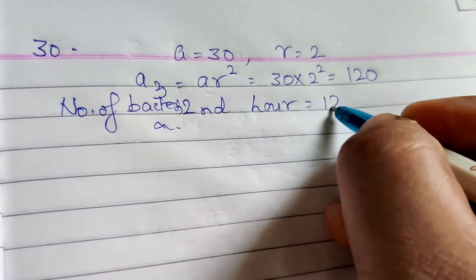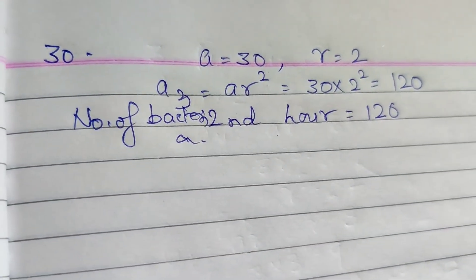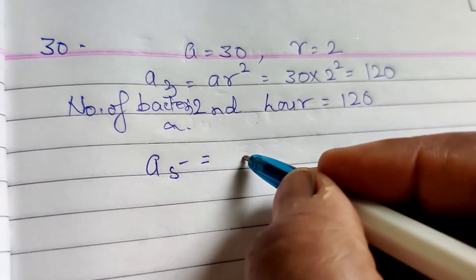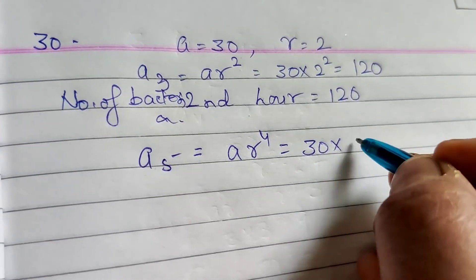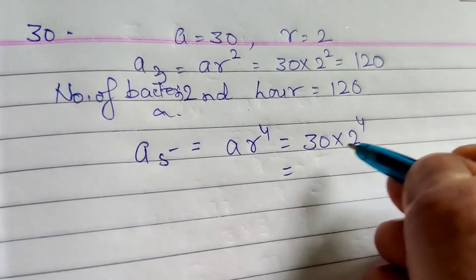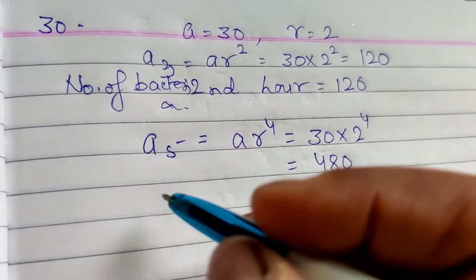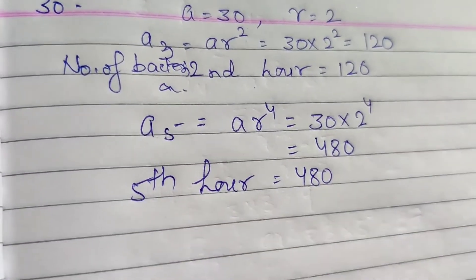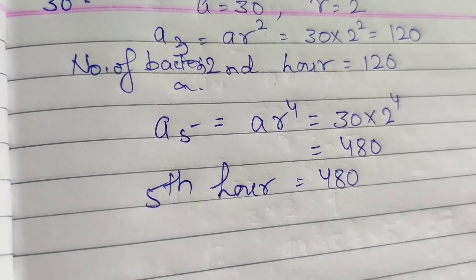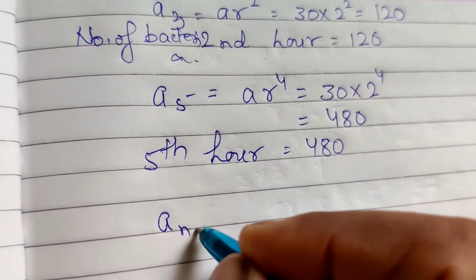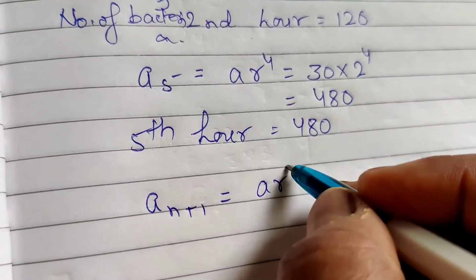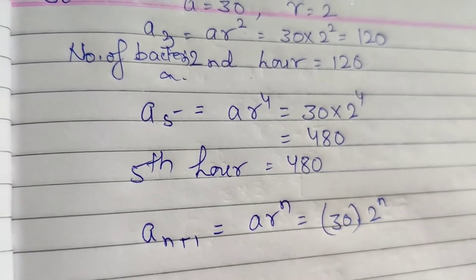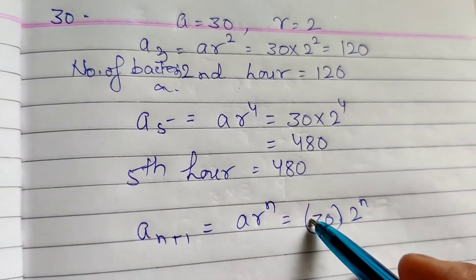In the second hour: AR = 30 × 2 = 60. In the third hour: AR² = 30 × 4 = 120. The number at the start of the fourth hour is AR³ = 30 × 8 = 240, so in the fourth hour it is 480 (AR⁴ = 30 × 2⁴ = 480). In the nth hour, the number of bacteria is AR^n = 30 × 2^n.